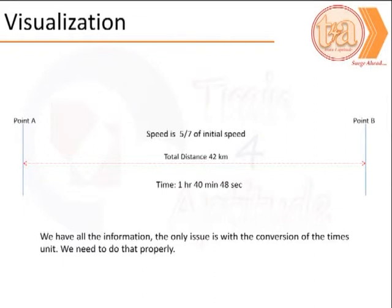We could visualize the problem as shown. It is 42 km between two points A and B. The speed of travel is 5/7 of a certain initial speed. The time to cover this distance is 1 hour, 40 minutes and 48 seconds at 5/7 of the initial speed. We are required to find the initial speed.